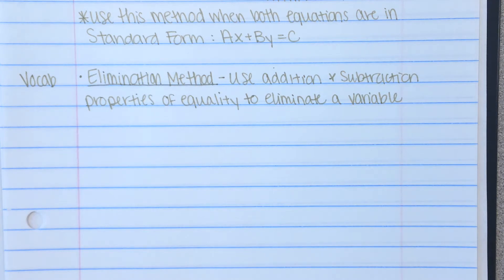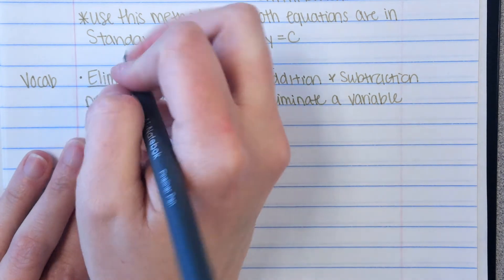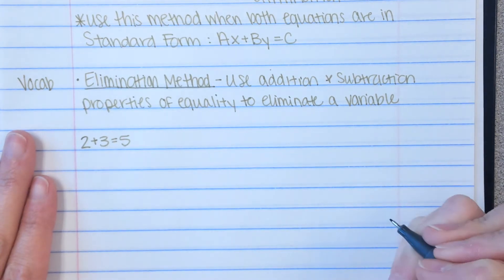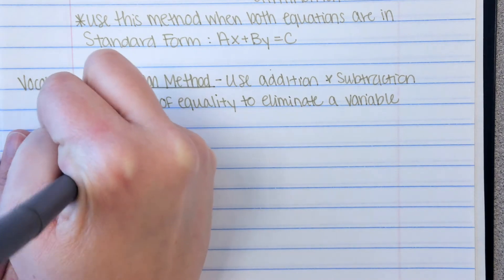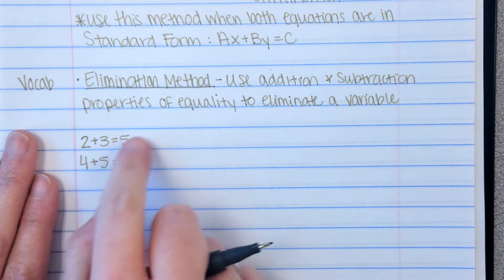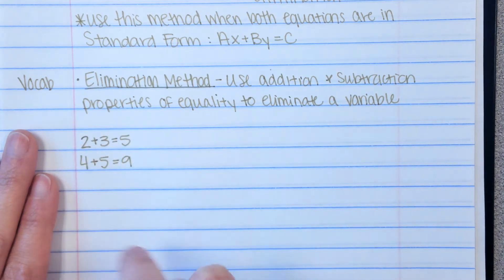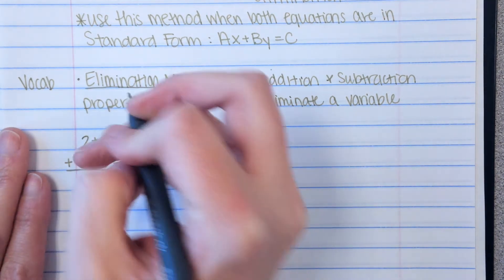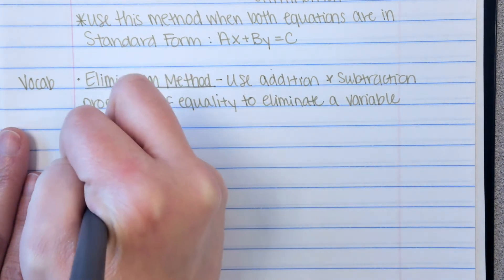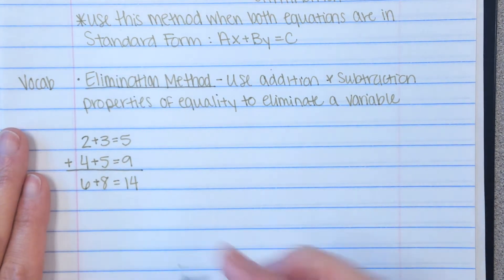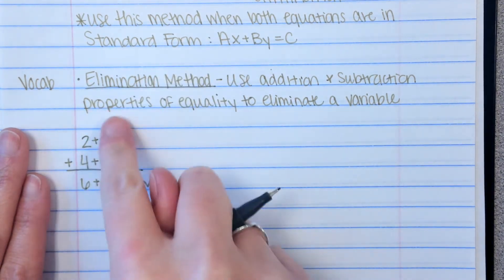You might remember me doing this example back in Algebra 1. If you have 2 plus 3 equals 5 — is that a true statement? Yes. What about 4 plus 5 equals 9? Yes. The addition property of equality basically says if you add two true statements, you get a true statement. So 2 plus 4 is 6, 3 plus 5 is 8, 5 plus 9 is 14. Does 6 plus 8 equal 14? Yes — that's the addition property of equality.